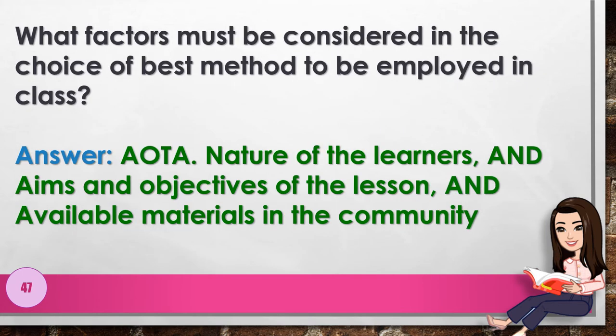Number 47: What factors must be considered in the choice of best method to be employed in class? Answer: all of the above — nature of the learners, aims and objectives of the lesson, and available materials in the community.